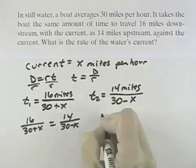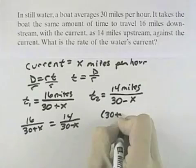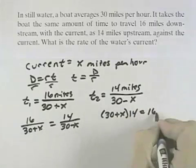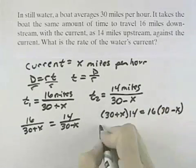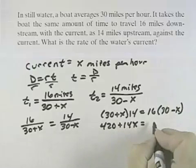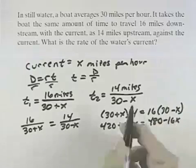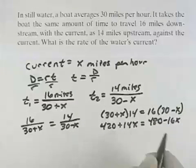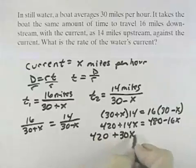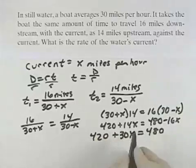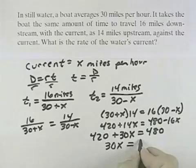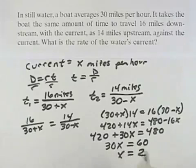I'll get the 30 plus x times 14 to cross this way, and then I'll get 16 times 30 minus x. When I multiply that out, I get 420 plus 14x equals 480 minus 16x. Solving this, I can add 16x to both sides, which gives me 30x on the left, and no x is left on the right. I can subtract the 420 from both sides to get 30x equals 60, which divided by 30 means x equals 2.